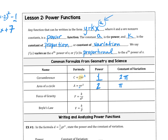Force of gravity is k divided by d squared. To figure out what the power is, you bring that d up — d comes up and becomes d to the negative 2. So the power is negative 2. For Boyle's Law, volume equals k over p. The p needs to come up, so we rewrite it as k times p to the negative 1. The power is negative 1.